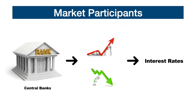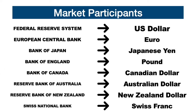Central banks are the most important participant in this market together with governments. Central banks have the power to decide whether to raise or lower interest rates, and the market as a result will immediately start moving sharply. The central banks we refer to are the Federal Reserve System, the European Central Bank, the Bank of Japan, the Bank of England, the Bank of Canada, the Reserve Bank of Australia, the Reserve Bank of New Zealand, and the Swiss National Bank.